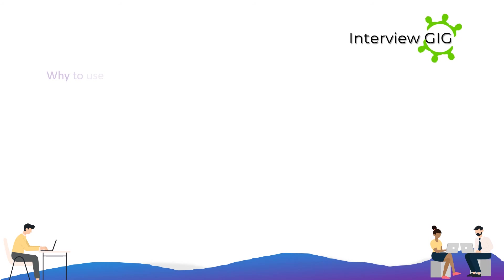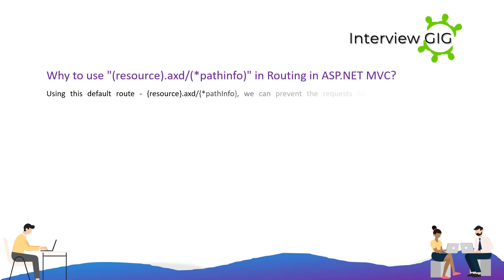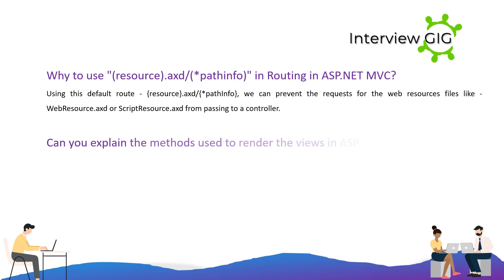Why use RouteExistingFiles / PathInfo in routing in ASP.NET MVC? Using this default route RouteExistingFiles/PathInfo, we can prevent requests for web resource files like WebResource.axd or ScriptResource.axd from passing to a controller.